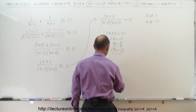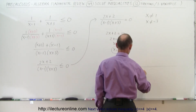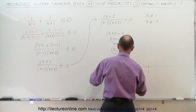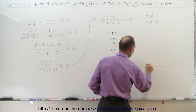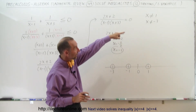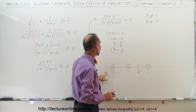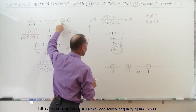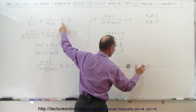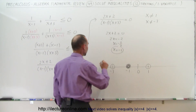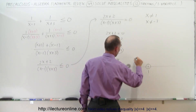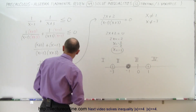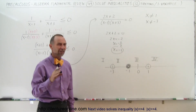Now we draw the number line and find the three critical points: negative 3, negative 1, and positive 1. We draw little circles around them. Two of those three cannot be included in the solution — the values x cannot be, which are 1 and negative 3. But x equals negative 1 can be part of the solution, and it has to be because we see the equal sign, so this becomes part of the solution, but those two points do not. We have four regions on the number line.